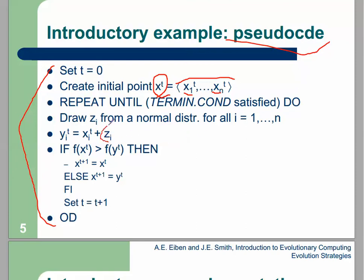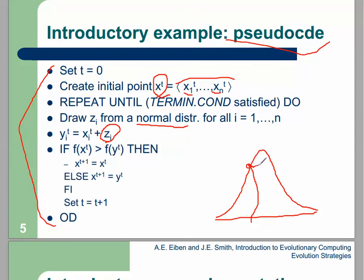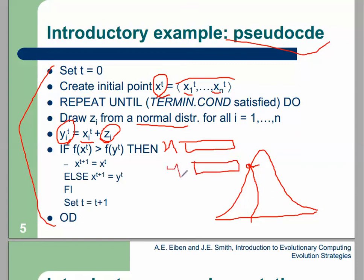You produce a real value with normal distribution. Z is a value in a normal distribution — for example, Z might be 0.5 or 1.2. Then you add Z to each gene to produce a new gene. You have element X and you produce element Y by changing each gene by adding Z. Z is a small value produced by a normal distribution.